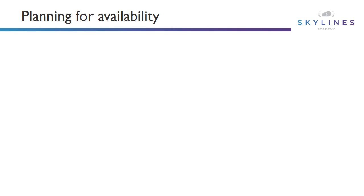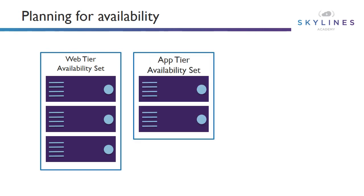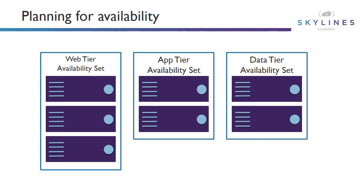When planning for availability in more detail, we also need to think about what goes into an availability set. It's very important that you put your tiers into separate availability sets. We would have an availability set for our web tier, one for our app tier, and one for our data tier. From a fault domain perspective, if we had three fault domains in our web tier, those three servers would be separated across three underlying fault domains. If we combined everything — data tier, app tier, and web tier all together — we could end up with all of our data VMs on the same fault domain. With only three fault domains, Microsoft spreads machines out amongst them, and if too many are grouped together, all data machines could land on the same fault domain, which doesn't help us from an availability standpoint.